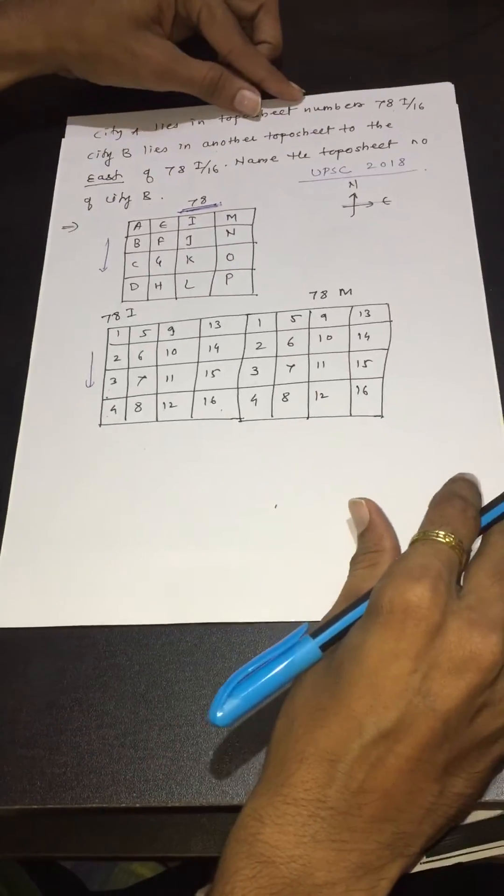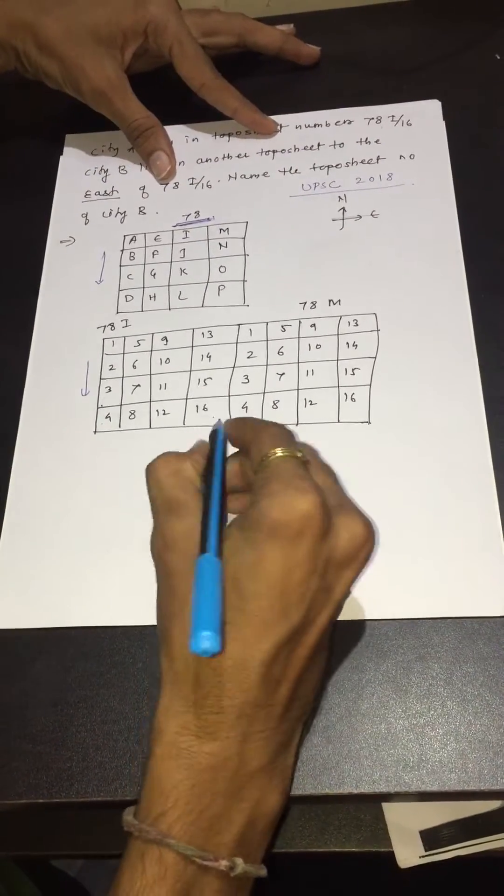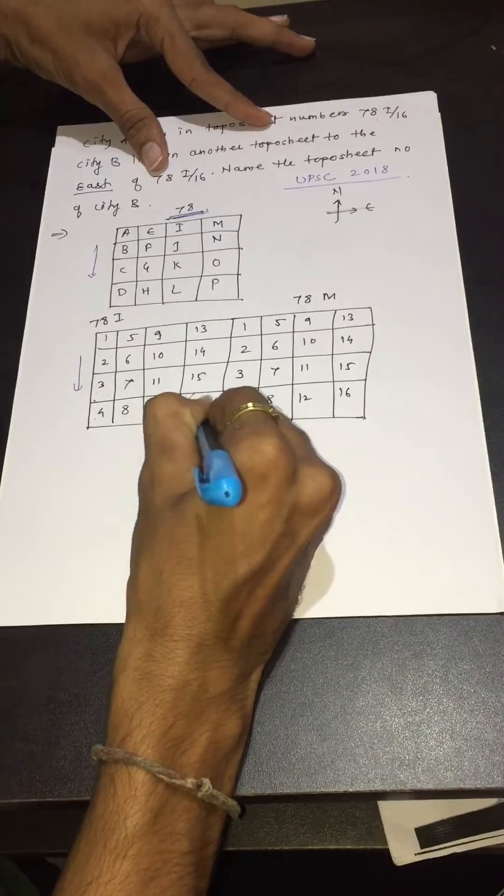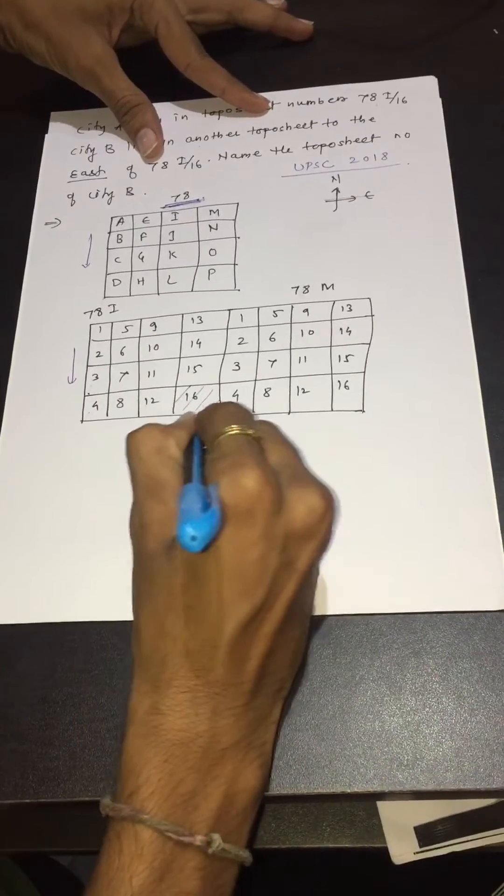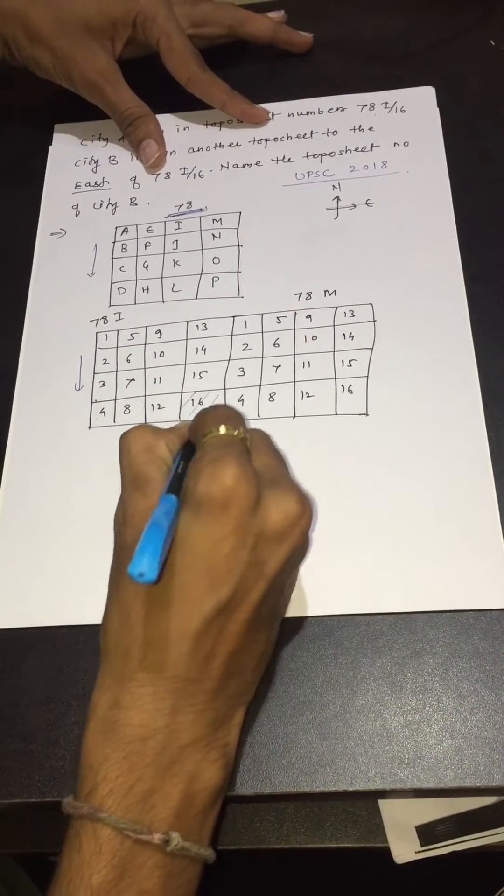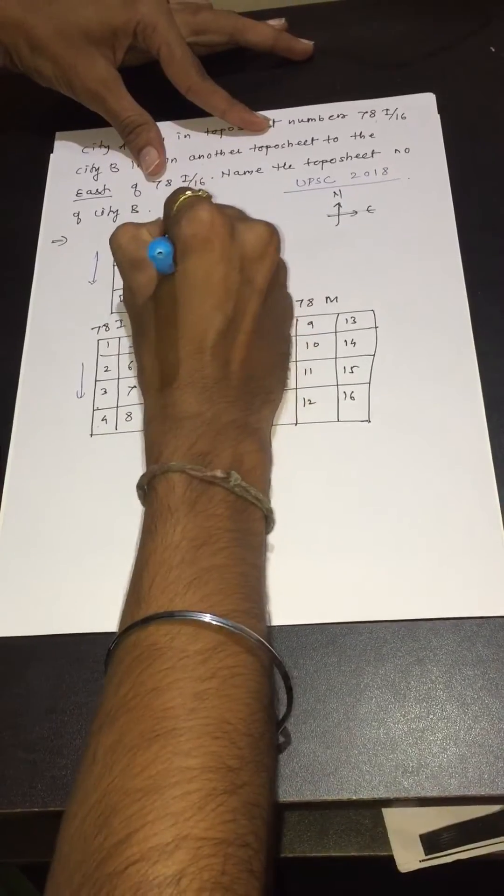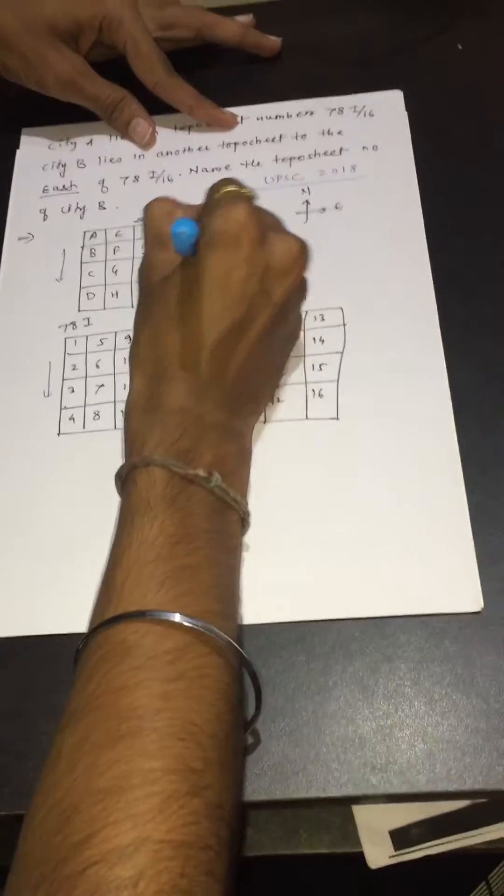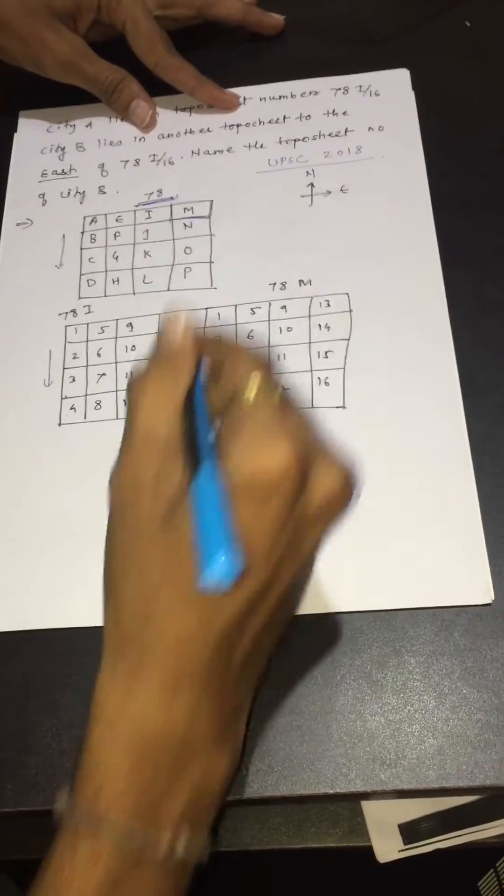We have to name the toposheet number which lies east of 78 I by 16. Toward east of 78 I by 16, after I we get toposheet number M toward east.